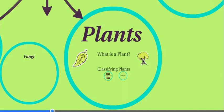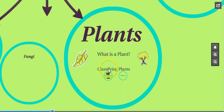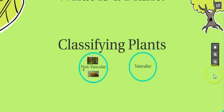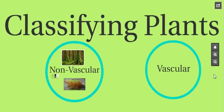In this lesson, we're talking about how plants are classified. Plants are classified into two main categories: nonvascular and vascular.